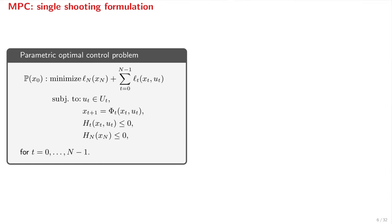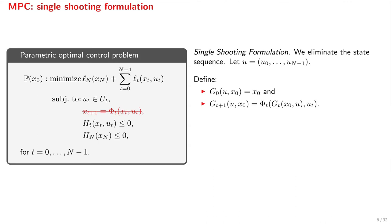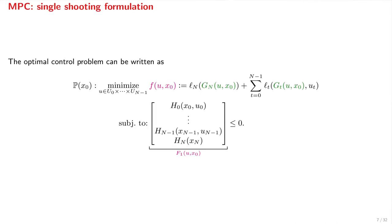Here is an example. An optimal control problem which is parametric in x0. A common approach is to follow the single shooting formulation, where we eliminate the state sequence and end up with a problem with decision variables, the control actions u0 to uN minus 1. To do so, we express the state at each stage t as a function g subscript t of x0 and u.